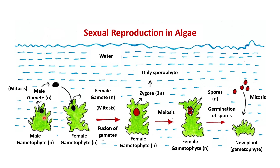The male gametophytic plant releases male gametes into the water. These male gametes float towards the female gametophytic plant via water. Fusion between male and female gametes forms a zygote within the female gametophyte, and the zygote is diploid. So the zygote is the only diploid cell in algae, and we call this zygote the sporophyte. That means sporophyte is formed from gametophyte via gametes.